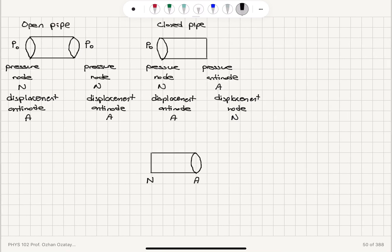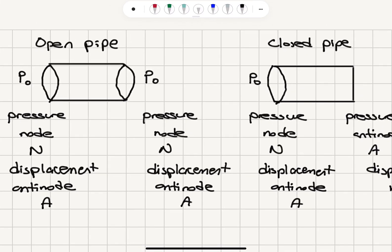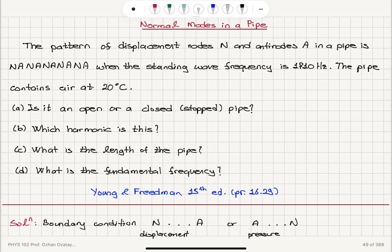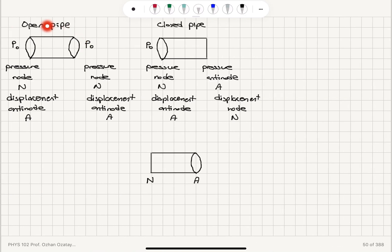Let's review what we know about pipes. In an open pipe, because both ends are open to air, the pressure must be fixed at the outside pressure. Therefore, these ends should be pressure nodes, which immediately implies they should be displacement antinodes. Clearly, this scenario does not match our situation.